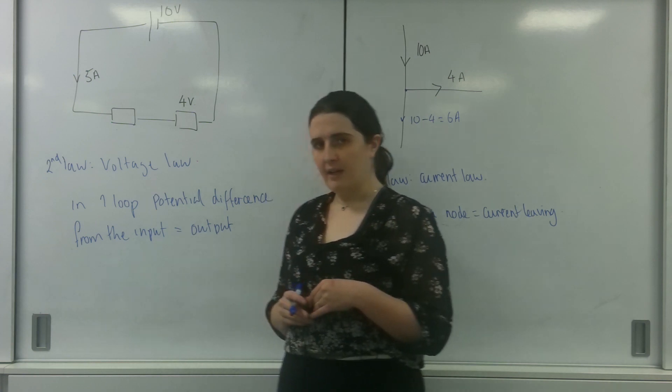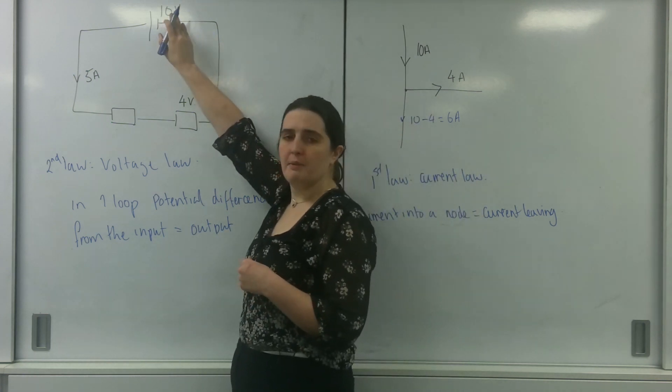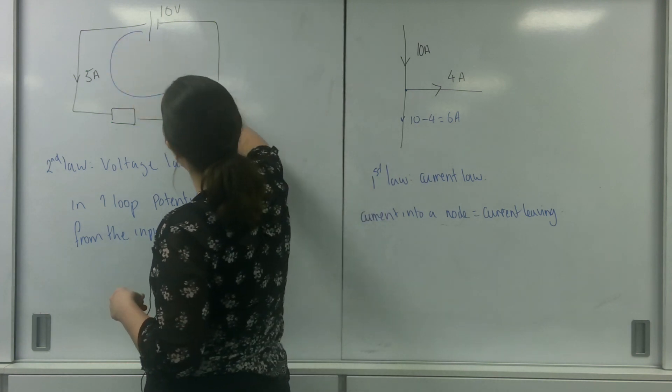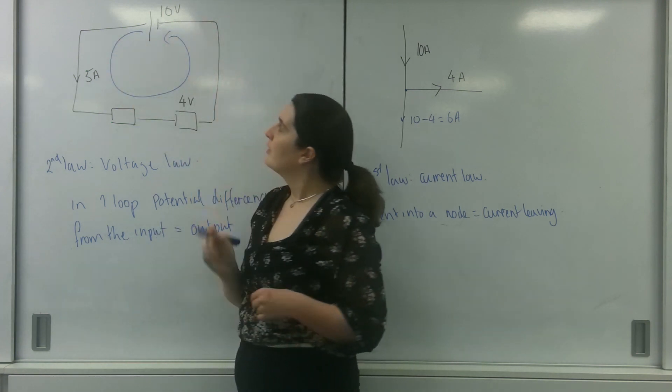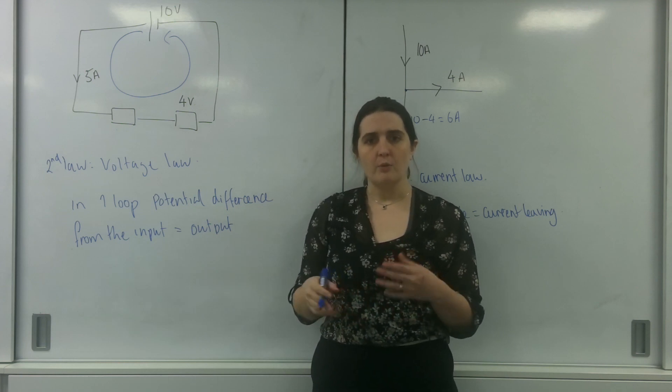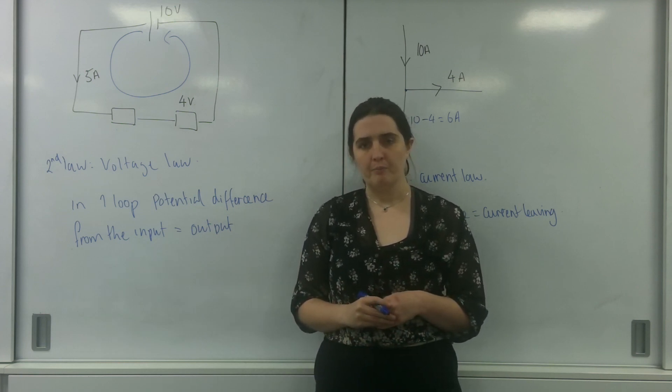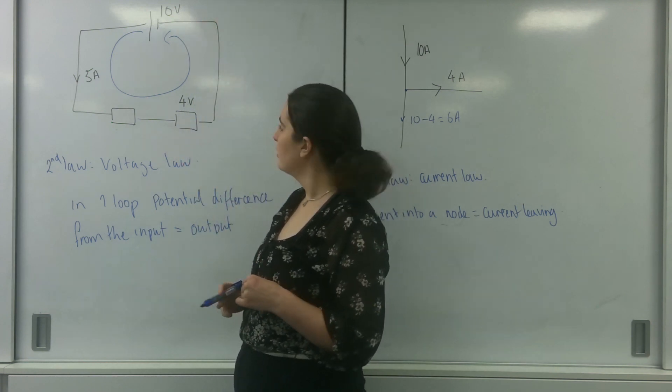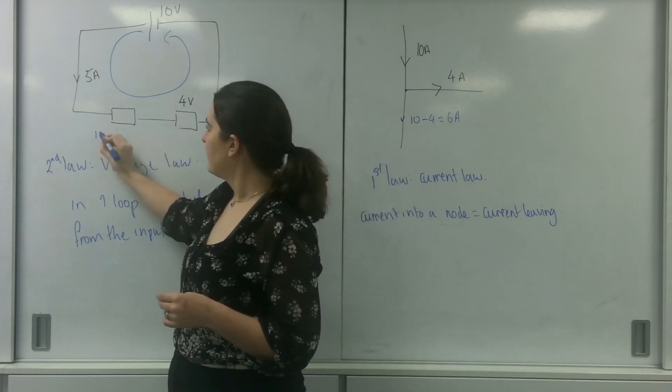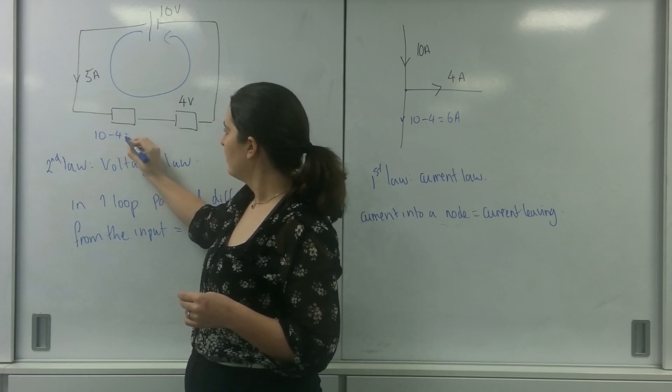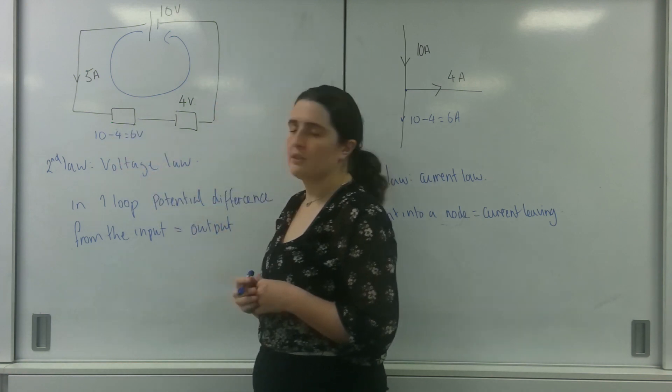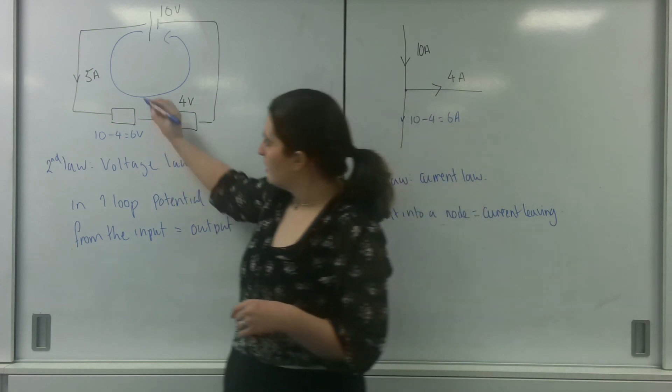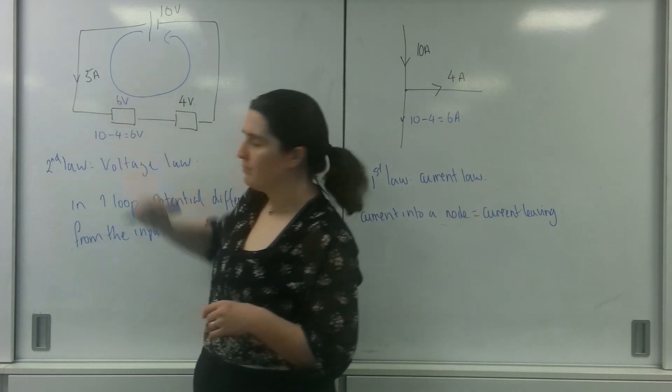And what I mean by that is that this is my input, this is my cell, and this is giving me 10 volts. In one loop around, 10 volts must be given to my output. This is 10, this is 4 volts, so here we'd have 10 minus 4, which is 6 volts. So there's 6 volts across this resistor here.